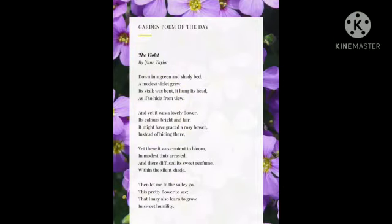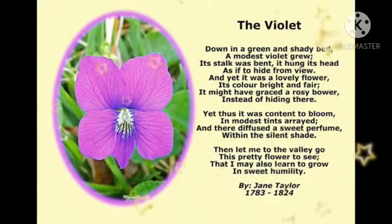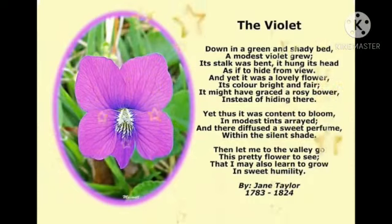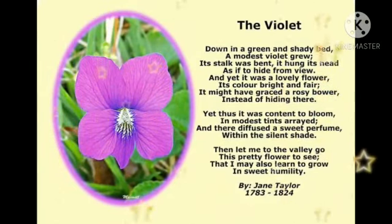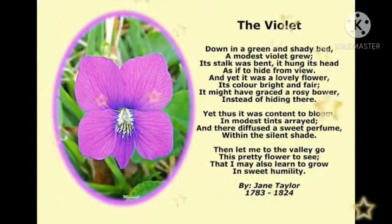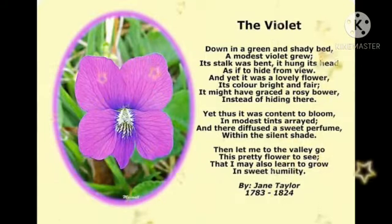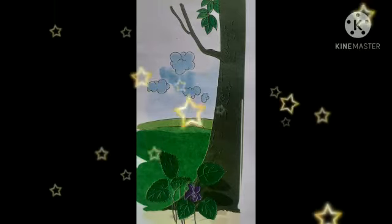Then let me to the valley go, this pretty flower to see, that I may also learn to grow in sweet humility. The speaker spots the modest violet as if it is trying to hide, with its bent stalk and hung head low. The speaker feels that with its beauty and charm, it could be a part of a rosy bower displaying its beauty. The speaker is touched by the modesty of such a beautiful flower and decides to go to the valley to see the violets and learn the lesson of humility from them.